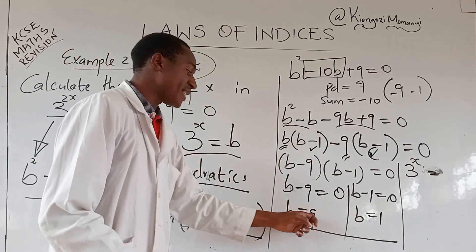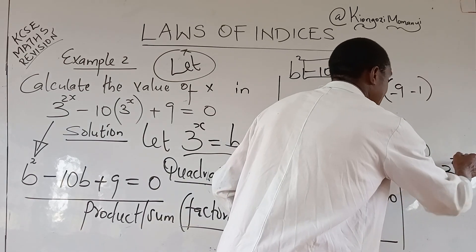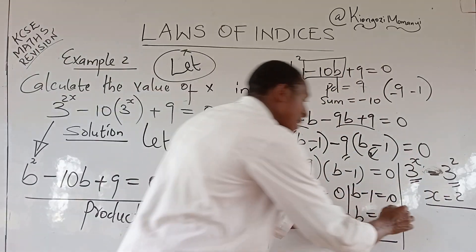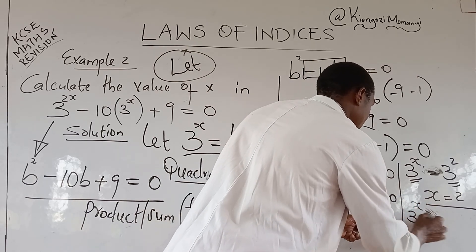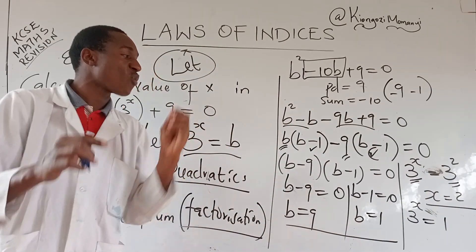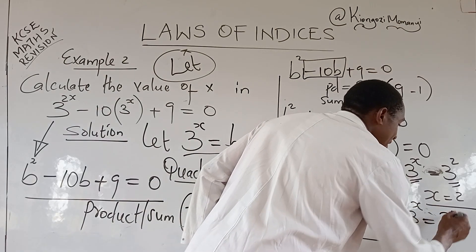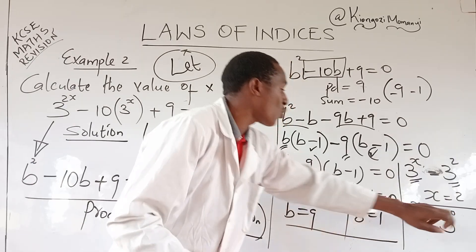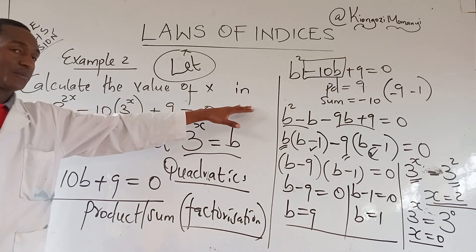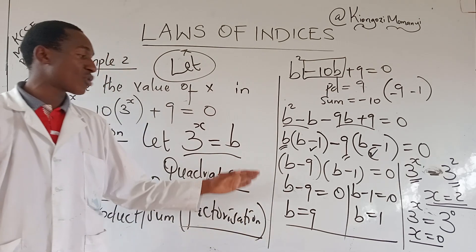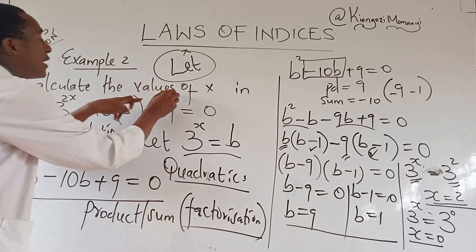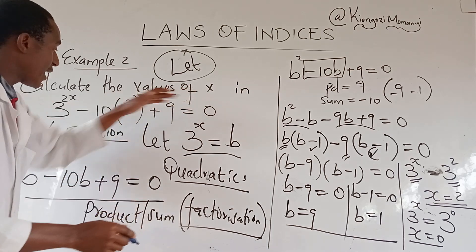But now see, you have looked for the value of b. You are yet to look for the value of x. So you come and finish this way. You will say 3 power x is equals to the first value of b, which is 9. 9 is the same as 3 square. Common basis, your x is 2. That is the first value. Second value, 3 power x is 1. Then you want the base of 3 which gives you 1. Any number raised to 0 is 1. So we want a common base here. We can say 3 power 0 because any number raised to 0 is 1. In other words, we are saying x is equals to 0. When you are solving a quadratic equation, you get two values. That is why we have got two values of b, and that means we also get two values of x.